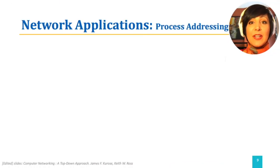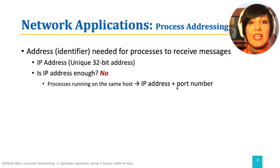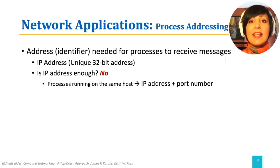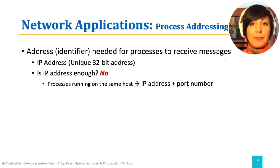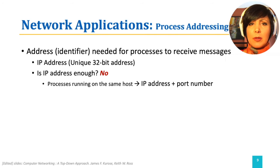In order to send a package to someone's house, you need their address — the destination address. An IP address, which is a unique 32-bit identifier we will further explore in later discussions, identifies the end system in the network. However, is that enough for addressing among processes?